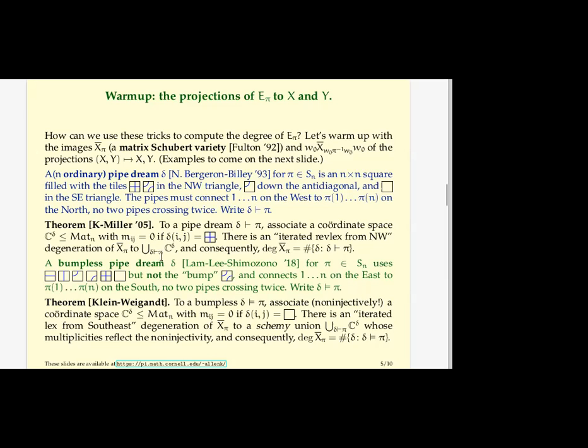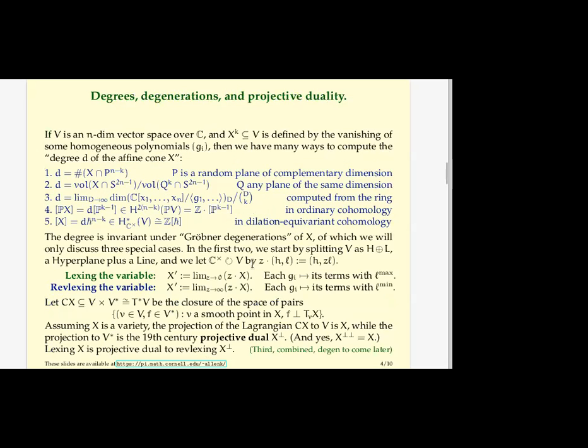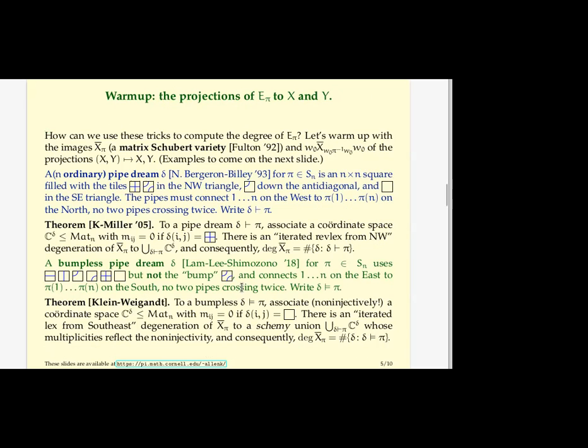So that you could get from the original literature on pipe dreams. But it was explained in this geometric way by me and Ezra Miller, shortly before the other paper I mentioned with the commuting scheme, where we degenerated the original matrix Schubert variety to a big union of coordinate spaces. The way we did it was with this revlexing degeneration. We revlex the Northwest variable Z11, and then Z12, and then Z13, Z21, and then Z22. We just dig our way from the Northwest, revlexing one at a time.